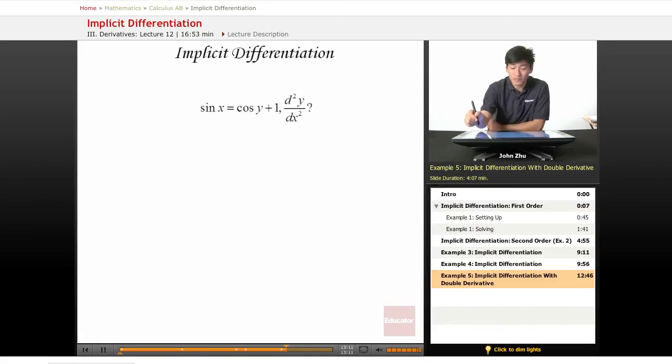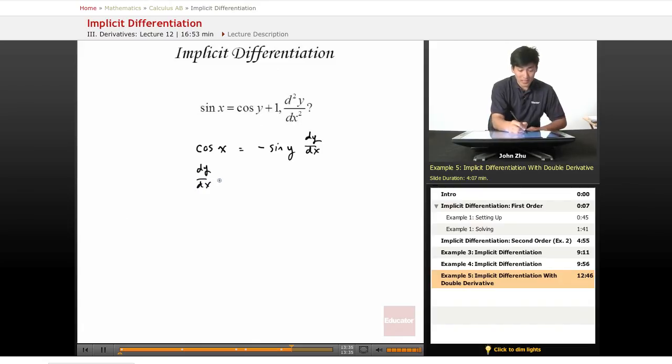So we just follow the rules. Sine of x, derivative of that is cosine of x, so cosine of x dx/dx, which is one, equals negative sine of y dy/dx plus derivative of one, which is zero. So we get dy/dx equals negative cosine of x over sine of y.